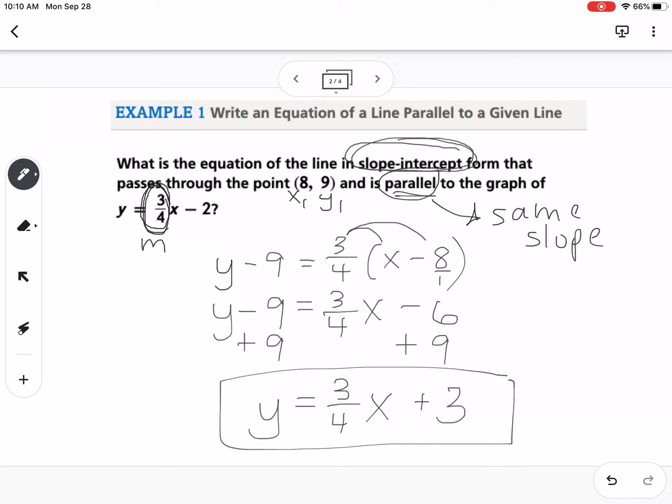So again, if it says parallel, that means they have the same slope. So we got the slope from the equation given to us. We got the point from the problem. We put it into point-slope form here. And then we rearranged it so that it's in slope-intercept form here.